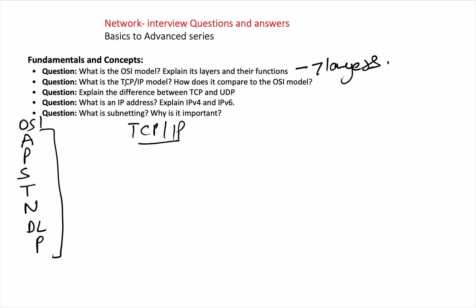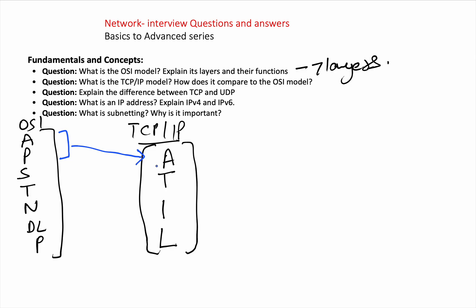In TCP/IP, Application and Presentation layers from OSI are clubbed together into the Application layer. Session is also moved into the Application layer, since the application layer itself manages sessions. Transport layer remains similar — essentially the same as the OSI Transport layer. Network layer is renamed to Internet layer, addressing IP addressing and routing. Data Link and Physical are merged into the Link layer.